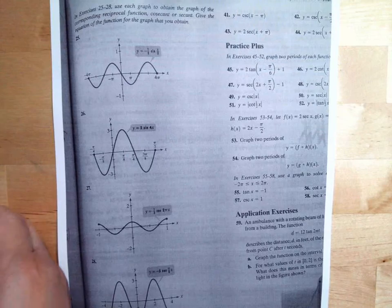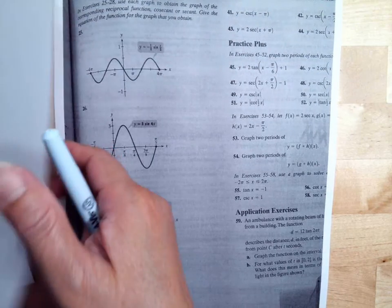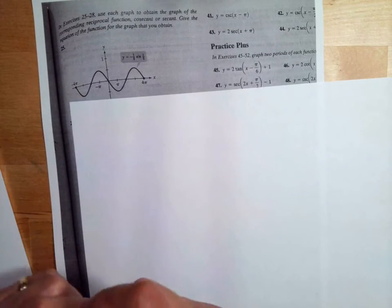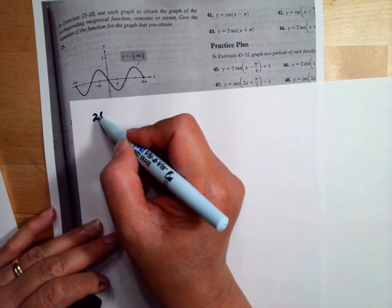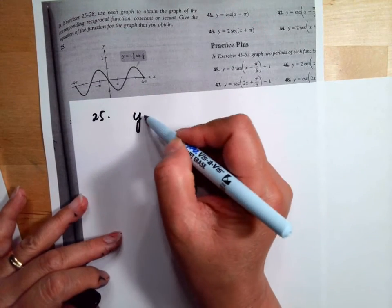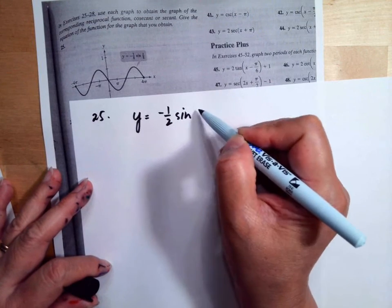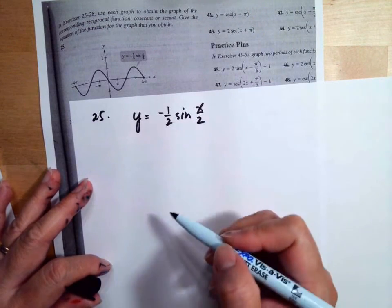Here, if you can see the first one, number 25, it says the graph is y equals negative one-half sine x over 2.